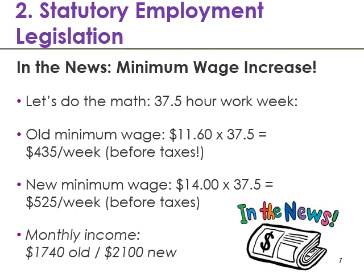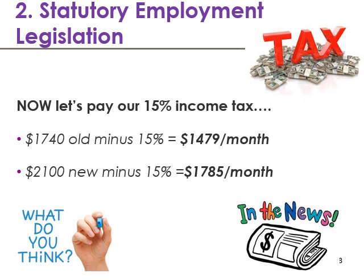If we multiply each of those by four, the monthly income at the old minimum wage was $1,740 a month, and at the new minimum wage is $2,100. Assuming 15% income tax — the minimum amount of income tax someone pays in Ontario — at $1,740 a month minus 15%, someone walks away with $1,479 per month. At the new minimum wage of $2,100 minus 15%, they walk away with $1,785 a month. Remember, they're working full-time hours to earn this money. Think about how much it costs to pay rent in, let's say, Oshawa or the Greater Toronto Area — most people are paying at least $1,000 a month for rent for a fairly small apartment or even a room.